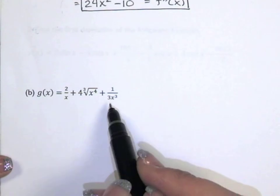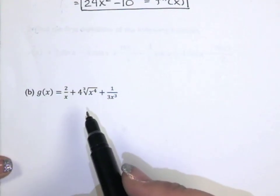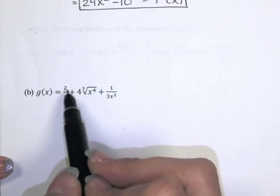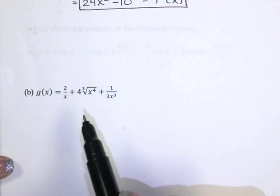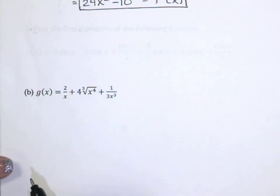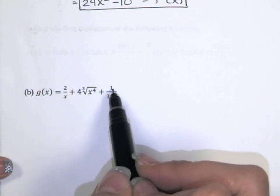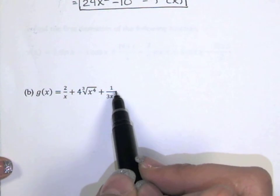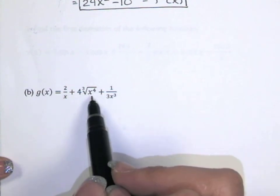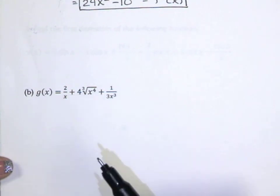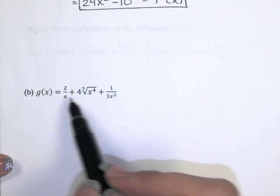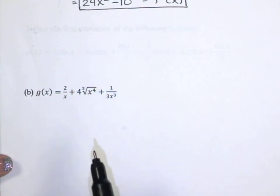With this one, it makes sense to rewrite it first. I could use the quotient rule here, but the quotient rule might be overkill. I've got a constant divided by x to some power in two places, and then this third root of x to the fourth can be rewritten as a power.